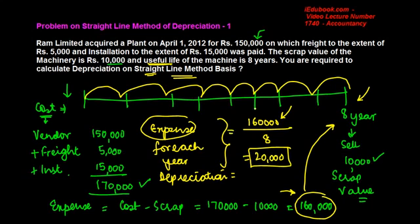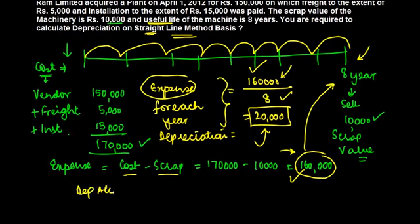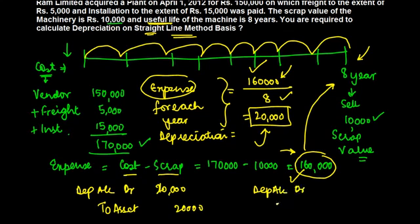So the depreciation on the straight-line method is obtained by: cost of the asset minus scrap value, divided by the useful life of the asset — giving 20,000 depreciation charged every year. The accounting entry is: depreciation account debit to asset account under the first method, or depreciation account debit to provision for depreciation account under the second method. In the next video, we will do another question on the straight-line method where the useful life is not given but the depreciation percentage is given.